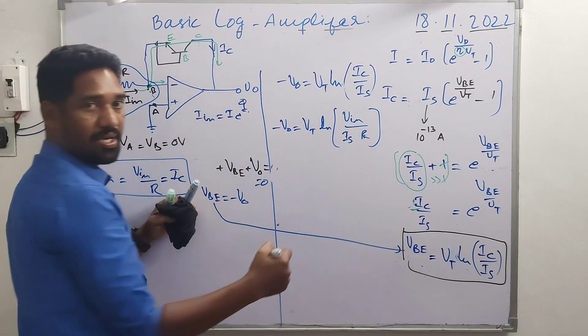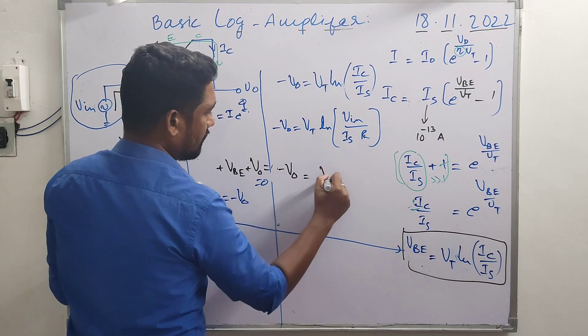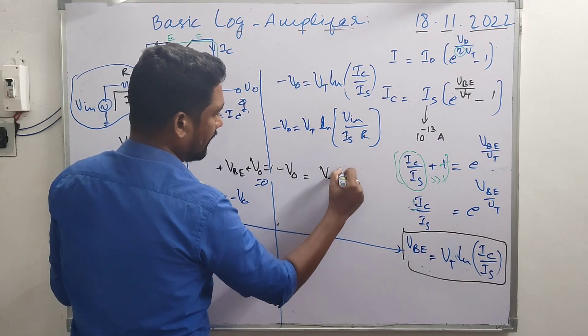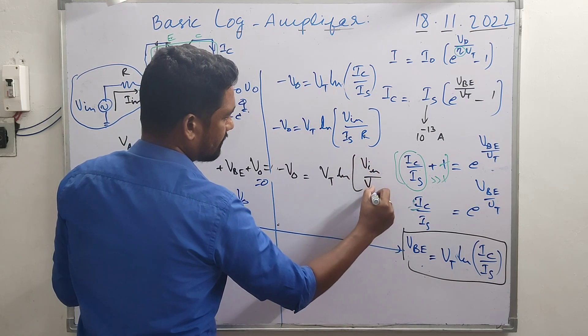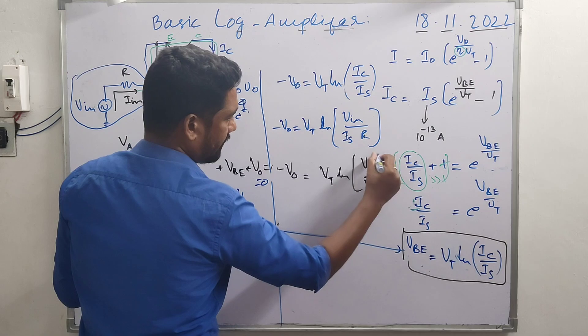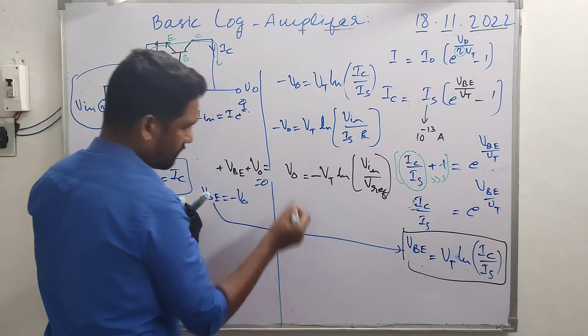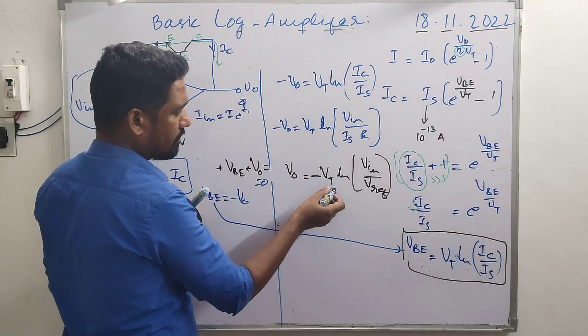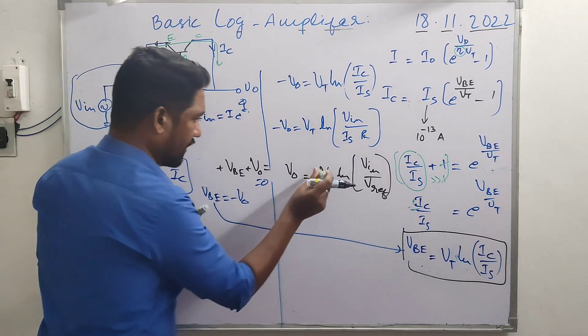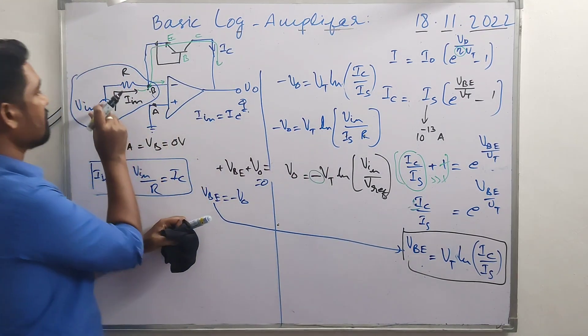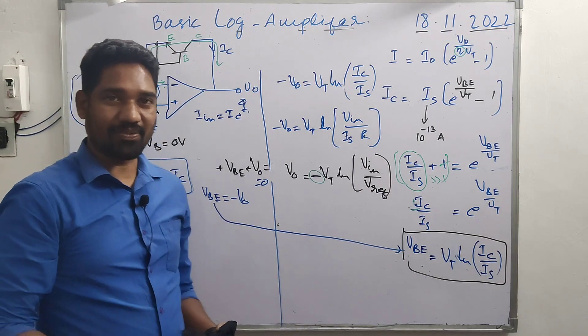Current into resistance is voltage. We can write it as V_reference. So -V_out = V_t × ln(V_in/V_reference). Therefore, V_out = -V_t × ln(V_in/V_reference). Why this negative? Because we are making use of an inverting configuration of the operational amplifier. Thanks for watching.